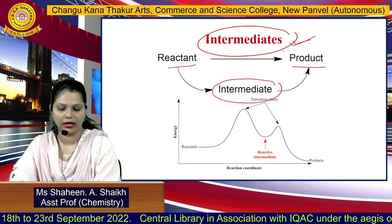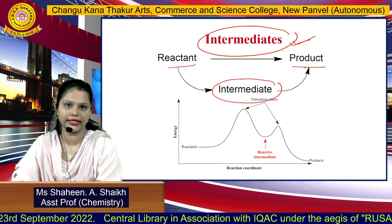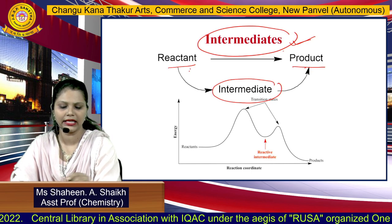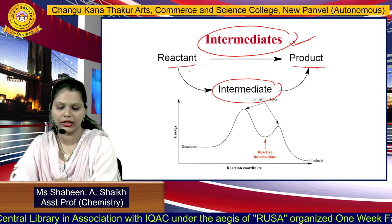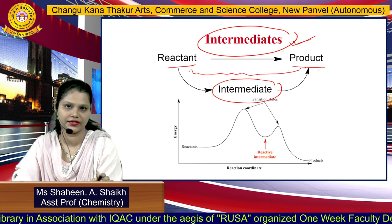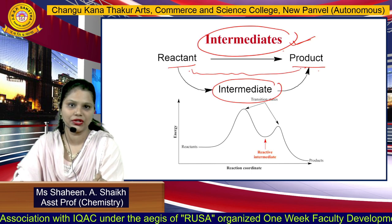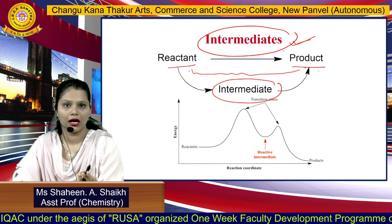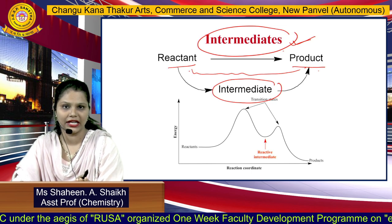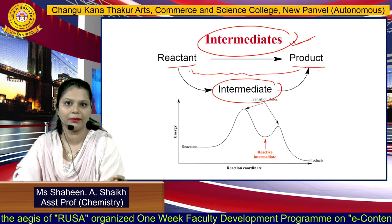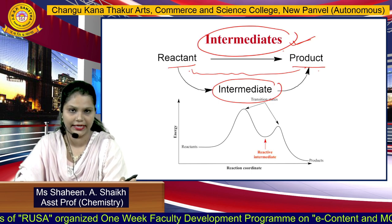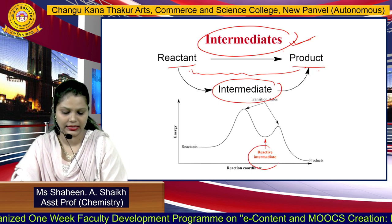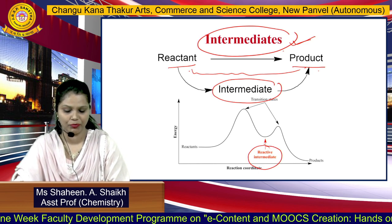Intermediates are compounds which are formed between the reactant and product. When the reactant is converted into product, it undergoes a series of structural changes. Out of this series of structural changes, one or two compounds have less energy and are stable, and can be isolated for a fraction of seconds. Such a compound is known as a reactive intermediate.